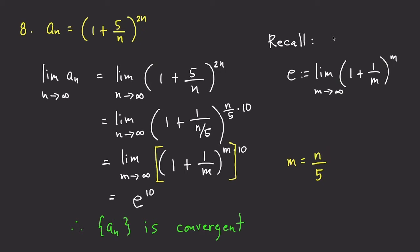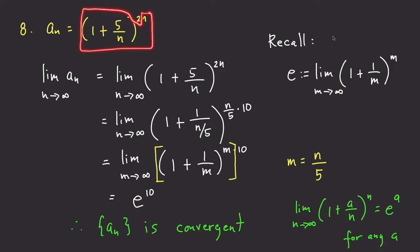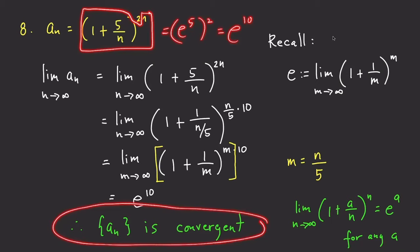To summarize a useful general fact: the limit of (1 + a/n) raised to n, as n goes to infinity, is equal to e raised to a, for any real number a. Using this, for (1 + 5/n) raised to 2n, you can first compute the limit without the exponent of 2, getting e raised to 5, and then square it to get e raised to 10. This allows you to immediately conclude that the sequence is convergent.